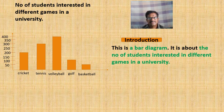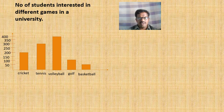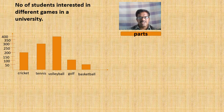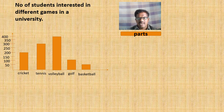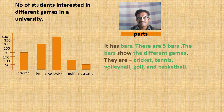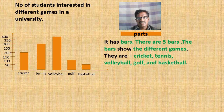As the second part of the description, we can make the students write the parts of the diagram. When you observe the diagram we can find the x-axis, y-axis, and bars. So we can write: 'It has bars. There are five bars. The bars show the different games.'